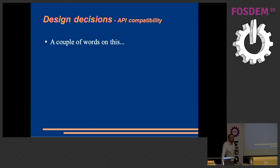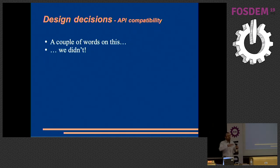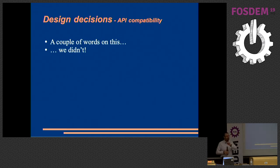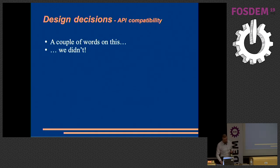Two words on API compatibility: we didn't do any. Who cares? It's a new thing. If you want to use new C++ features, you'll use the new API. When you make a call to D-Bus and the result comes back, you want it in a callback — but not the old-style C callback from 20 years ago. You want lambdas because they're new and cool. So you're going to use the new API anyway — we might as well make a clean break and not waste time back-implementing old APIs.